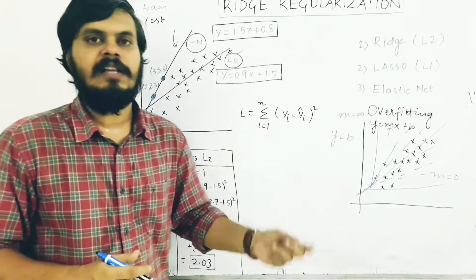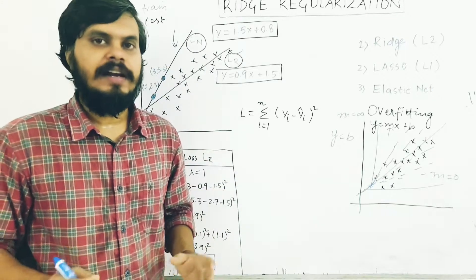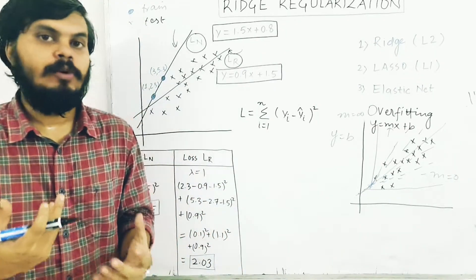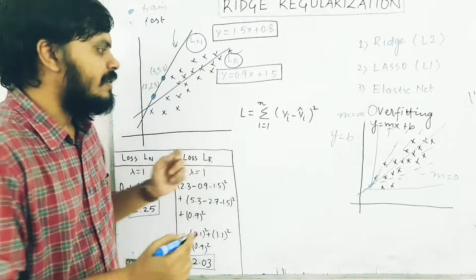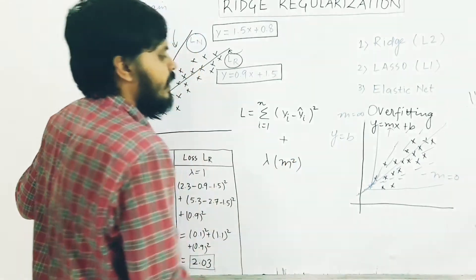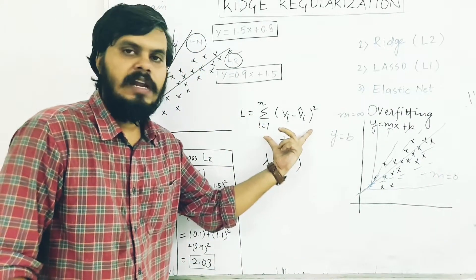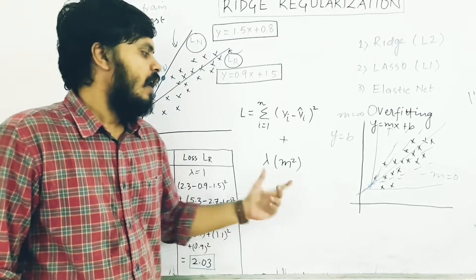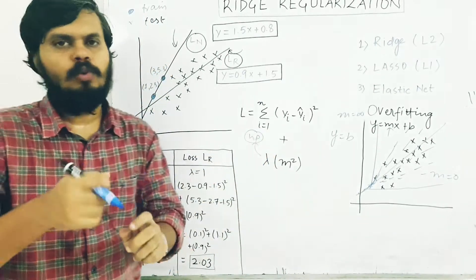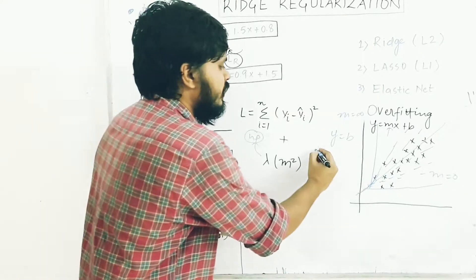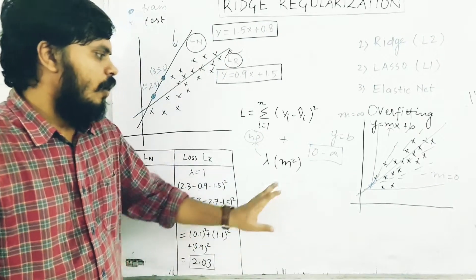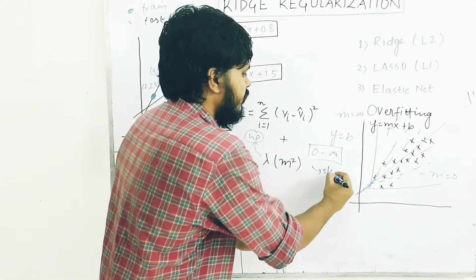The whole idea of linear regression is to minimize the loss function. Now we add an extra regularization term to the loss function. That extra term is lambda multiplied by m squared. Lambda is a hyperparameter — a value you can tune, generally ranging from 0 to infinity. And m is basically your slope. So the new loss function is the original residual error plus lambda times m squared.